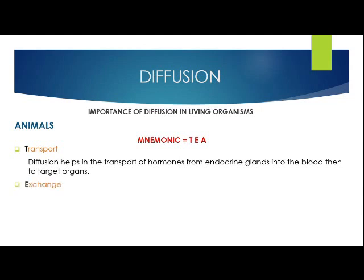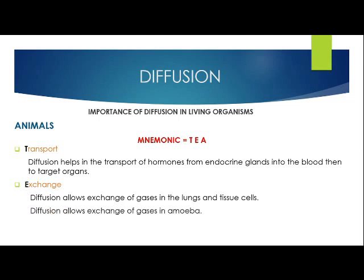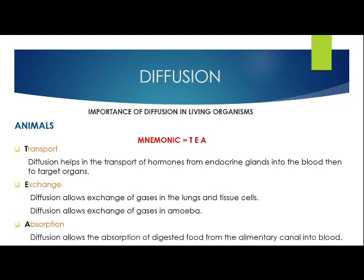E is for exchange. Diffusion allows the exchange of gases in the lungs and tissue cells. The gases exchanged in living organisms are simply carbon dioxide and oxygen. Diffusion also allows for the exchange of gases in amoeba. A is for absorption — diffusion allows the absorption of digested food from the alimentary canal, which is simply the digestive system, into the blood.